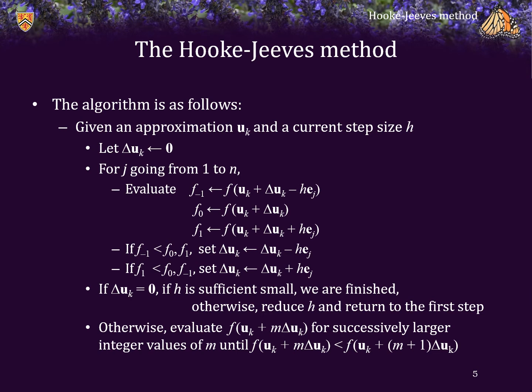Now, if delta u sub k is not equal to zero, then u sub k plus delta u sub k has a smaller value than f at u sub k. But we won't stop there. Instead, we will evaluate the function at u sub k plus delta u sub k, then u sub k plus twice delta u sub k, and so on for successively larger values of m. We will continue until we find a value such that f at u sub k plus m times delta u sub k is less than the next step. In this case, we assign u sub k plus one to be u sub k plus m times delta u sub k, and return to that first step.